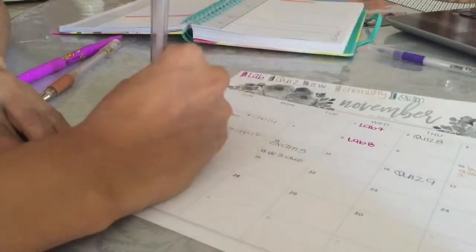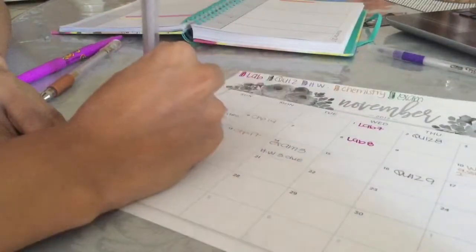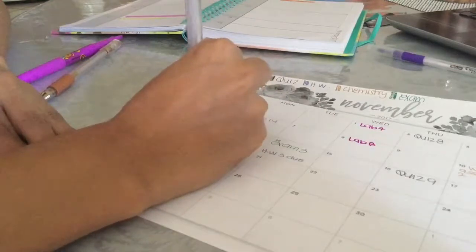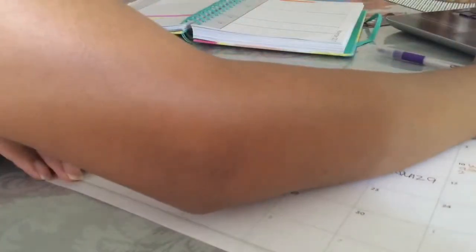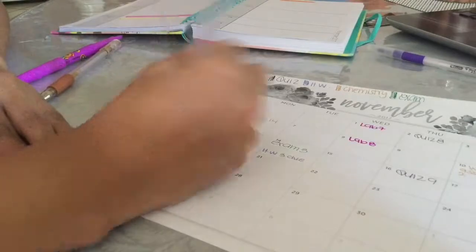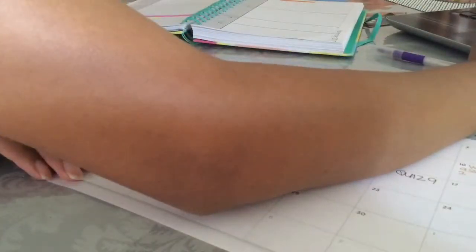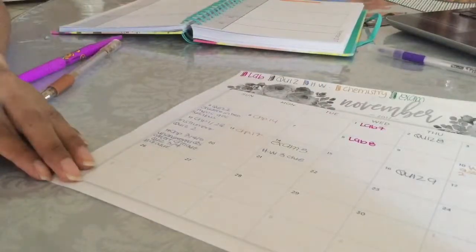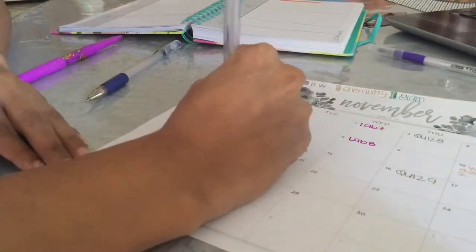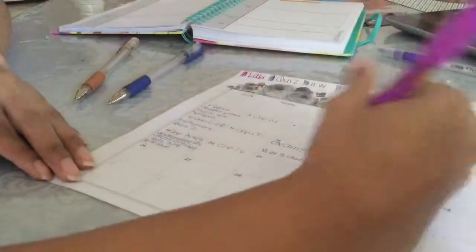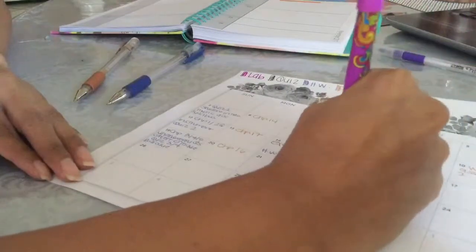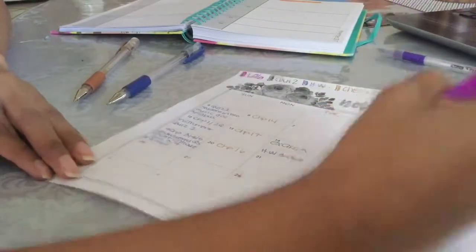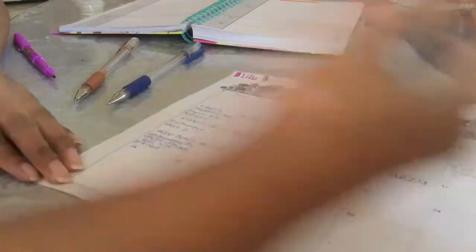So as you guys can see, I have basically written down everything that I have for the whole entire month. Just keep in mind, for my exam three I did make a mistake, and as you guys will notice at the end, I did go back in with whiteout just to erase that mistake that I made and then move my exam three on Wednesday, which is on the 15th.